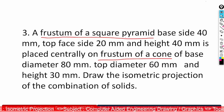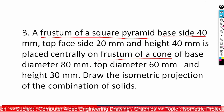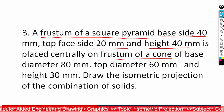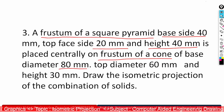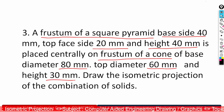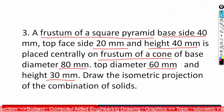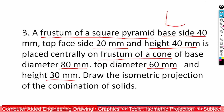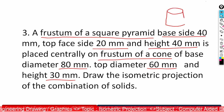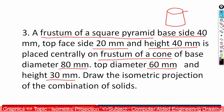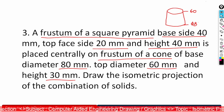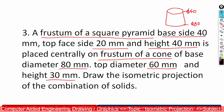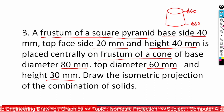The dimensions of the frustum of a square pyramid are: base side 40 mm, top base 20 mm, and height 40 mm. For the frustum of a cone: base diameter 80 mm, top diameter 60 mm, and height 30 mm. The cone frustum has a top diameter of 60 mm and bottom diameter of 80 mm, with the pyramid placed on top having a base side of 40 mm and top surface of 20 mm.